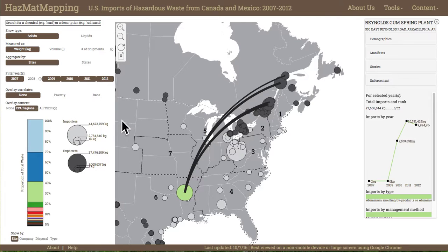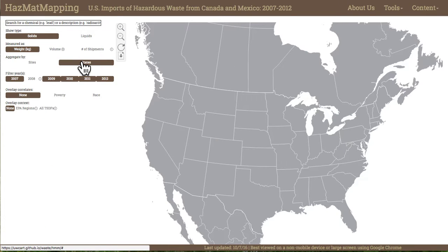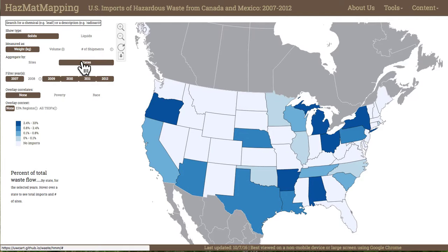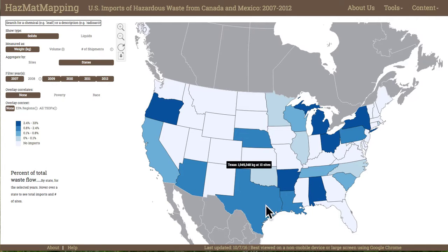She selects the states option in the map configuration controls, re-expressing the central map into a state-level choropleth map colored using a 5-class color scheme. The manager notices that Arkansas is the leading importer of solid hazardous waste in her region. This is surprising since Texas has a larger number of individual waste-importing facilities and thus occupies a larger portion of her day-to-day regulatory oversight. The permit manager moves the cursor over the state to retrieve information about its imports.